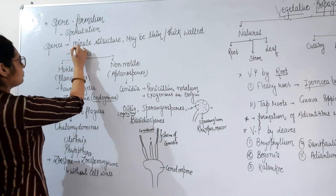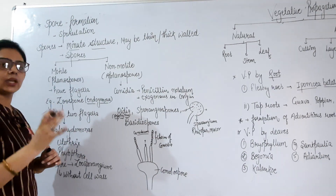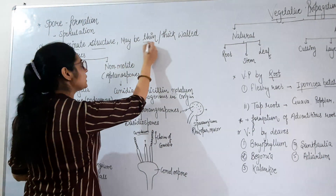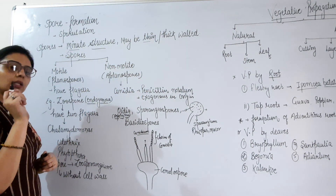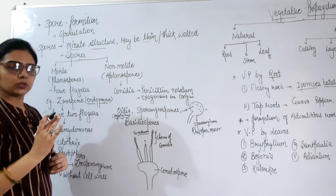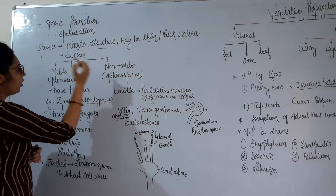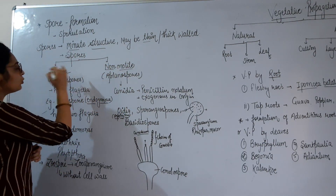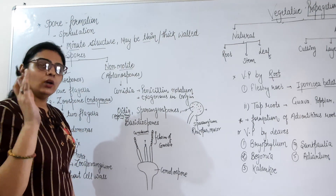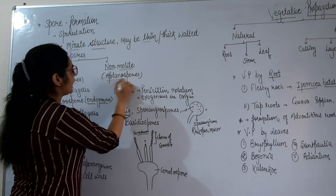What are spores? Spores are minute structures that can have either a thin wall or a thick wall. Spores can be motile or non-motile. Motile means that which moves — there is movement in them. Motile spores are also called planospores, while non-motile spores are called aplanospores.